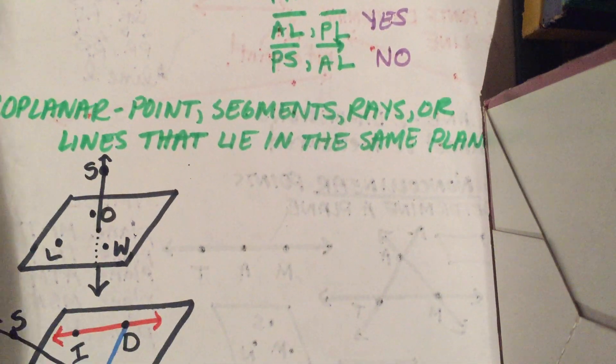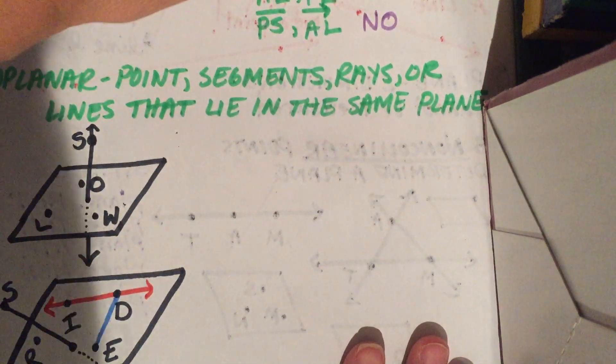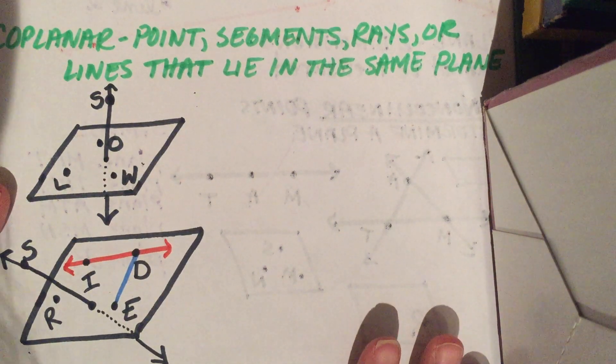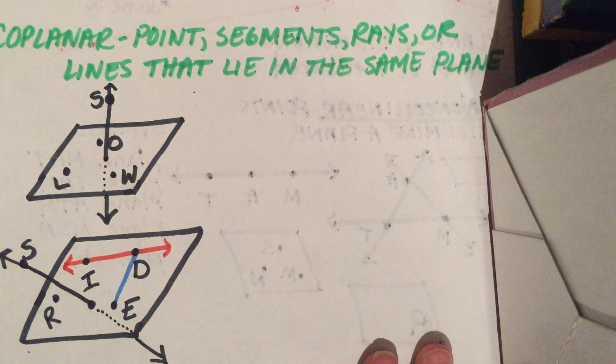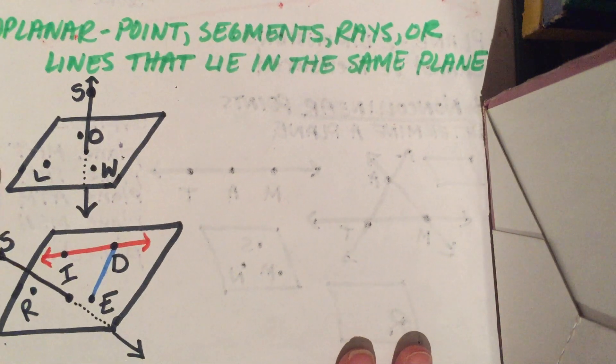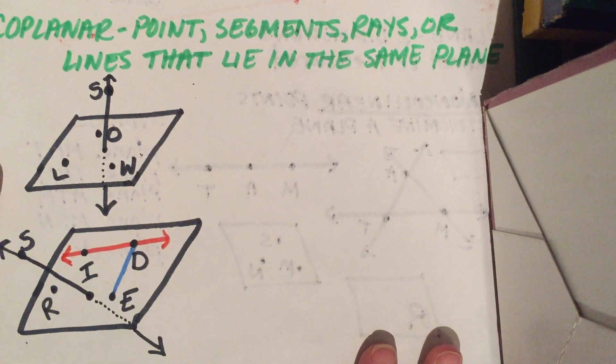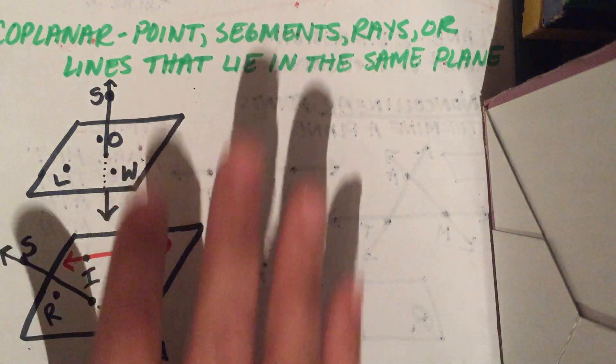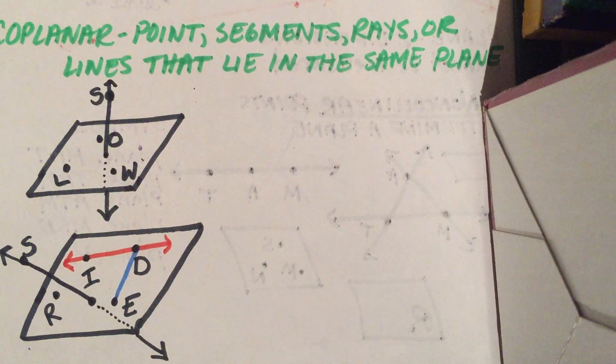So let's look at coplanar. Coplanar is a point, segment, ray, or line that lie in the same plane. Now we're adding lines because we're adding another dimension.